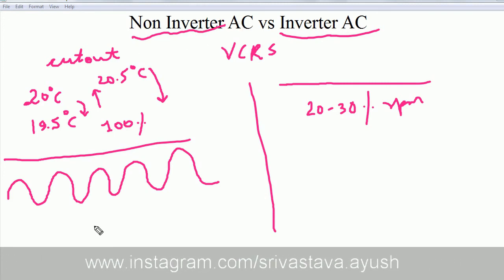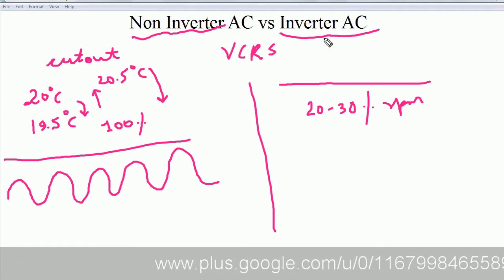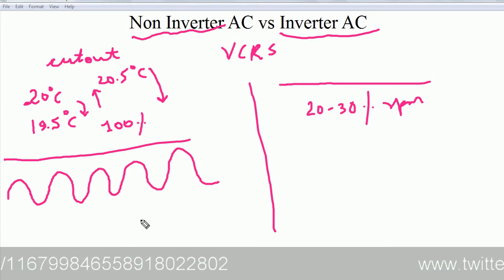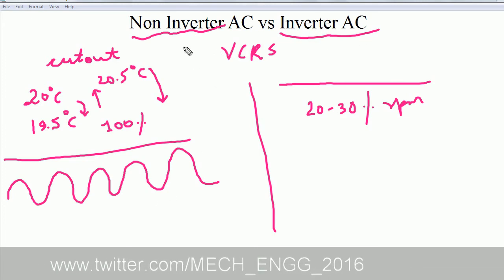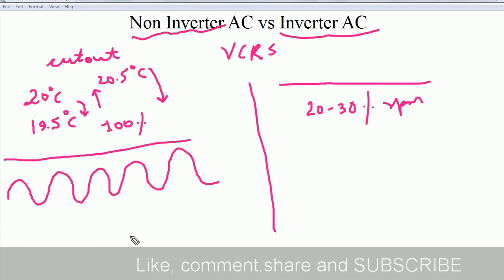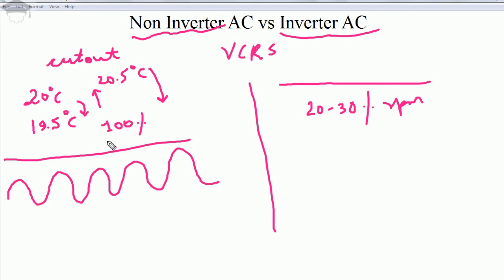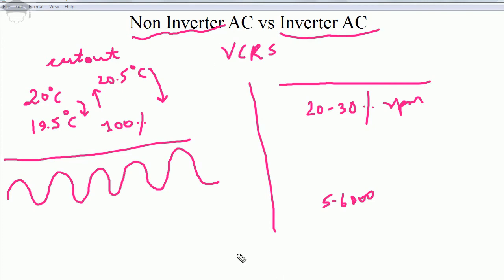Let us analyze which is cheaper or more economical. The capital cost of non-inverter AC is less compared to inverter AC, but the maintenance cost of non-inverter AC is much higher. The electricity bill is also more for non-inverter AC because the compressor runs at 100 percent load and draws much more power. The inverter AC has a higher capital cost — around five to six thousand more — than non-inverter AC.